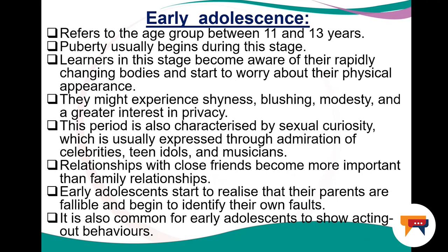Early adolescence refers to the age group between 11 and 13 years. Puberty usually begins during this stage. Learners become aware of their rapidly changing bodies and start to worry about their physical appearance. They experience shyness, blushing, modesty, and a greater interest in having their own privacy. This period is also characterized by sexual curiosity, usually expressed through admiration of celebrities, teen idols, and musicians. Relationships with close friends become more important than family relationships. Early adolescents start to realize that their parents are fallible and begin to identify their own thoughts. It is also common for early adolescents to show acting out behaviors.